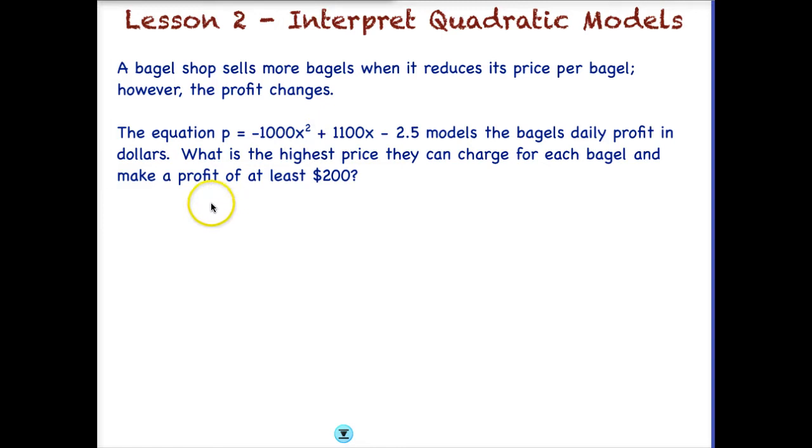So the question is, what is the highest price they can charge for each bagel and make a profit of at least $200? So now we're looking at the highest price. So we would go about this the same way we went about the other one. We would want to put $200 in for P. So we would write out our original equation, negative 1,000 X squared plus 1,100 X minus 2.5, and we would plug in 200 because this represents the profit, and we want to make a profit of 200.